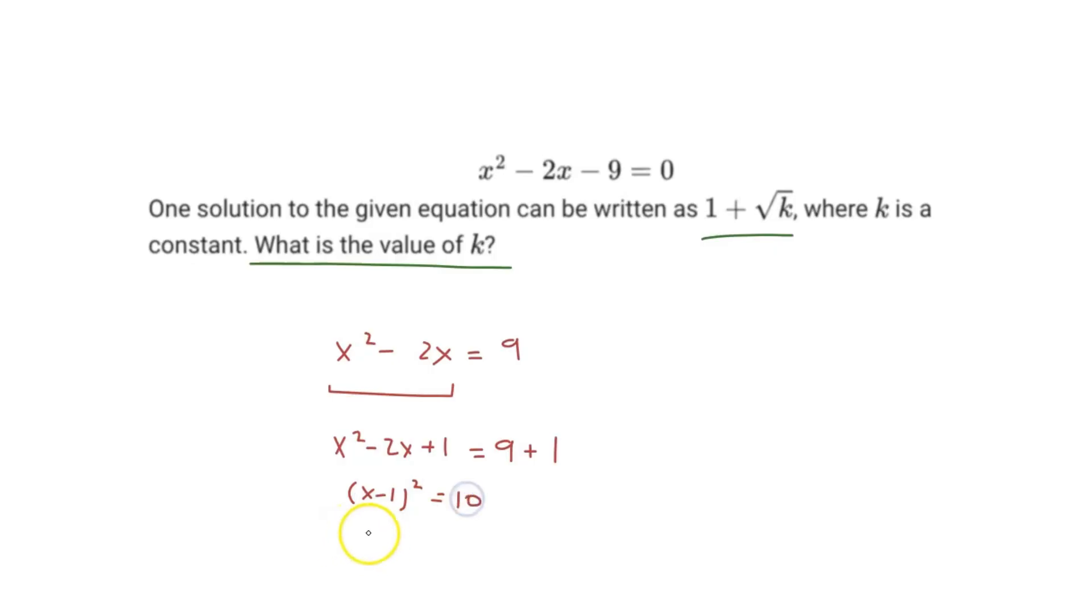So now this is really simple to solve, because now we just have to isolate and solve for x. So if we take the square root of both sides, we get square root 10. That will be equivalent to x minus 1. If we add 1 on both sides, we end up getting 1 plus square root 10 equals x.